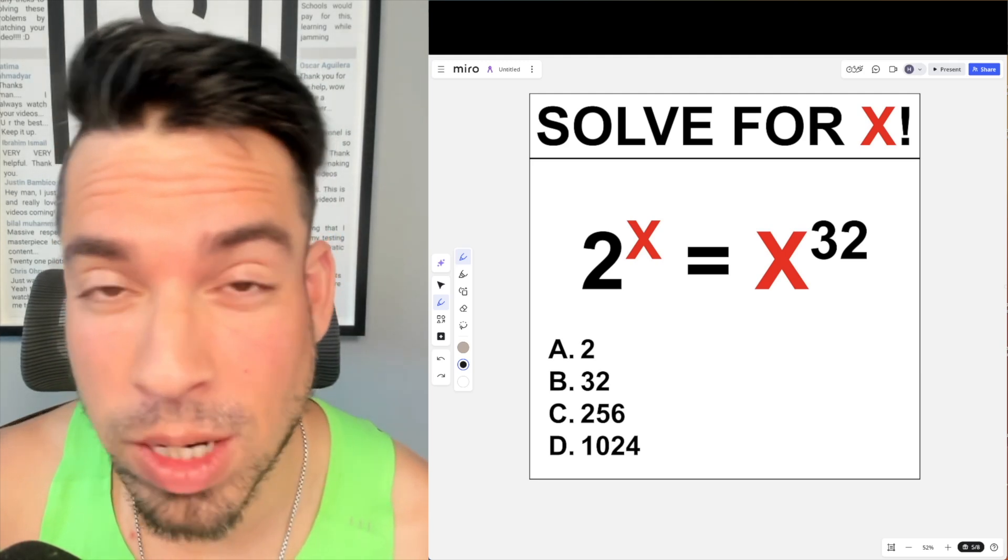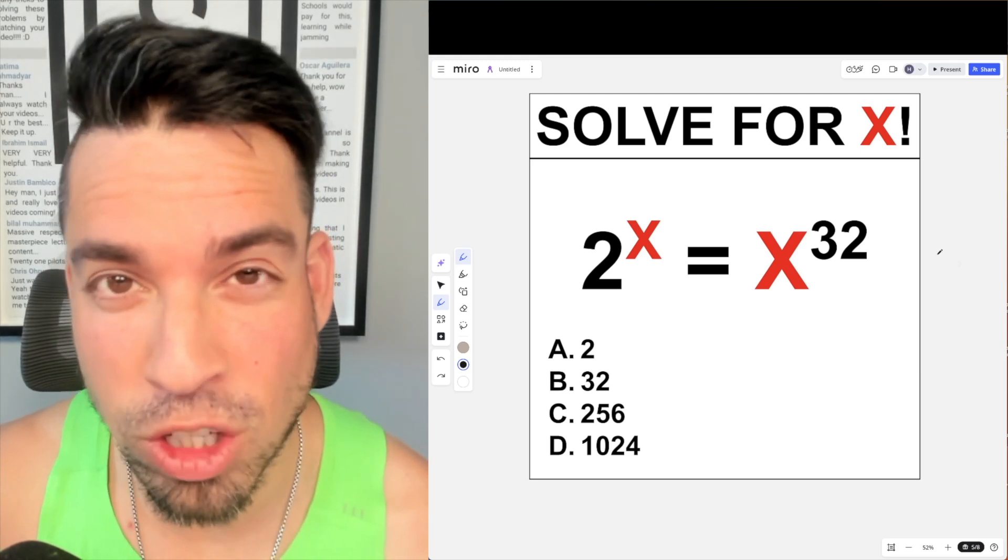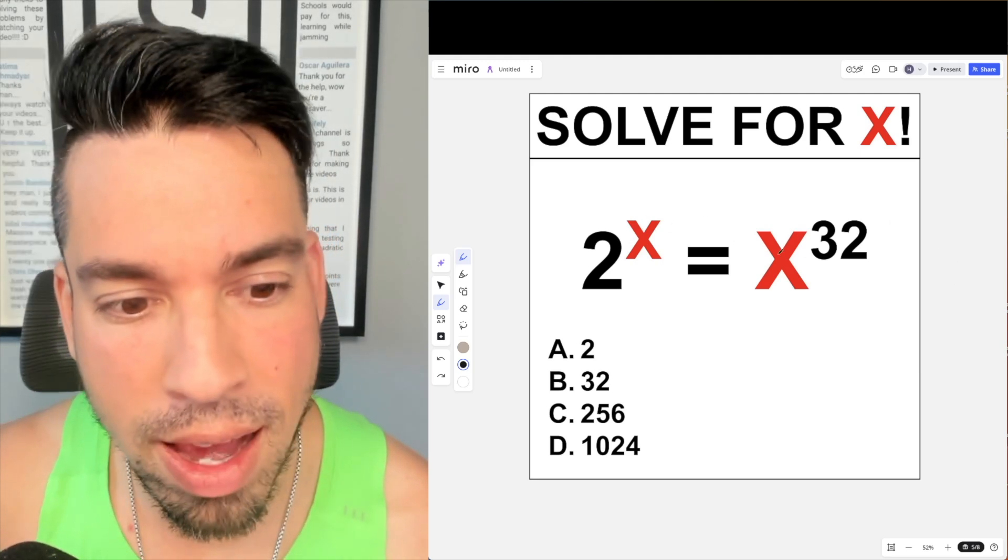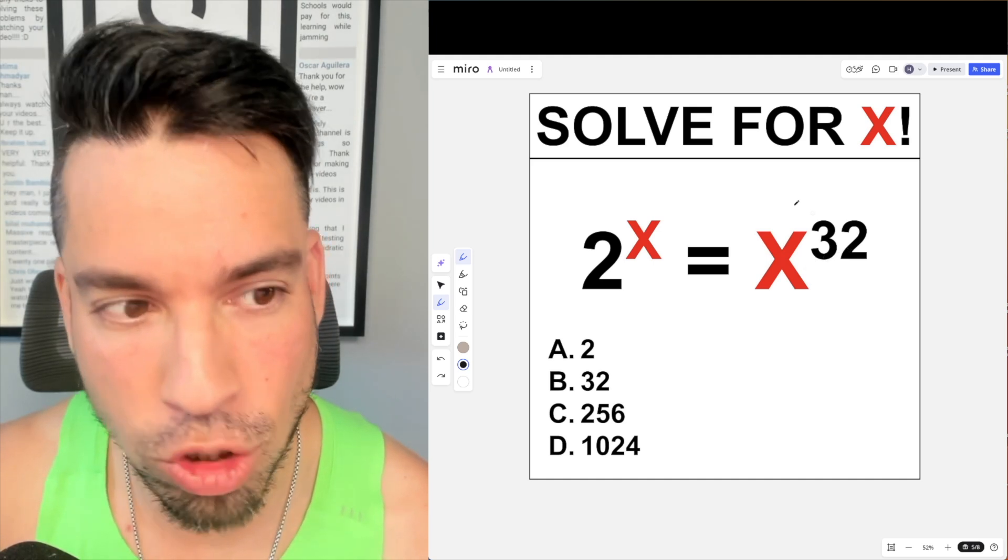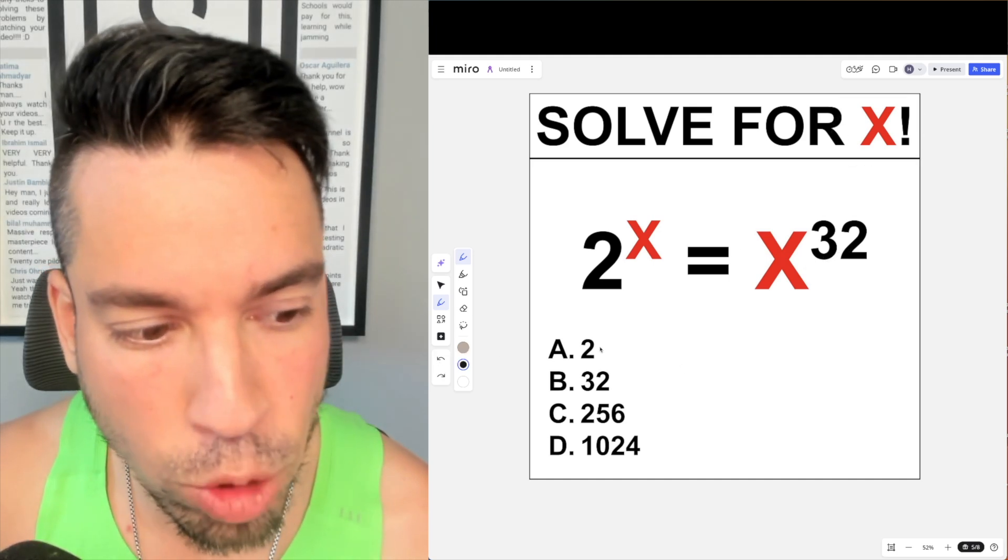What's up everybody and welcome back to another math puzzle. In this one, the question is as follows: 2 to the x equals x to the 32. We are solving for x, and this is a nice multiple choice.